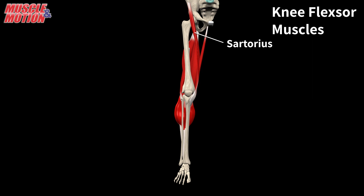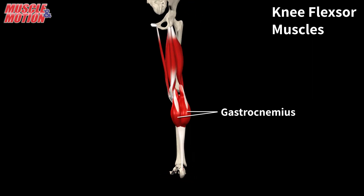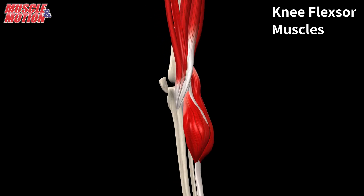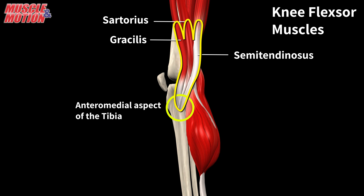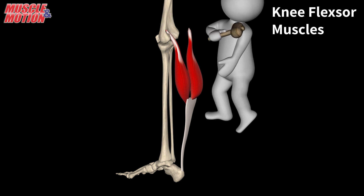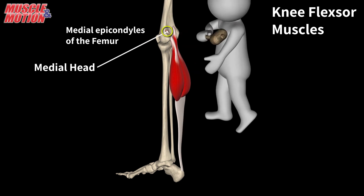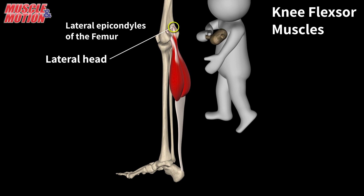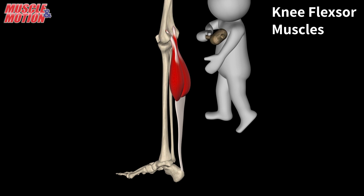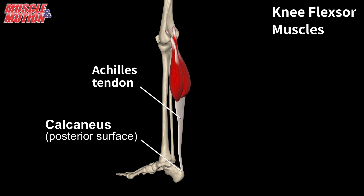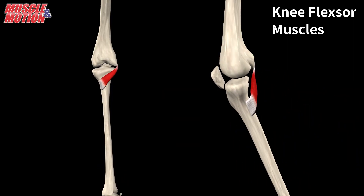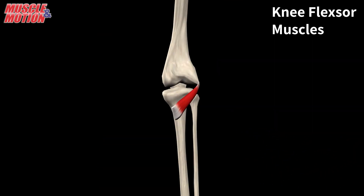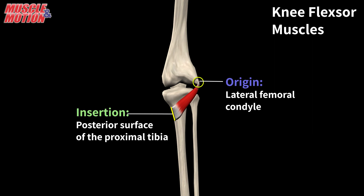Additional knee flexor muscles are the sartorius, the gracilis, the gastrocnemius, and the popliteus. The sartorius and the gracilis, along with the semitendinosus, all insert into the anteromedial aspect of the tibia, also known as the pes anserinus, or goosefoot. The gastrocnemius has two heads — the medial head originates from the medial epicondyle of the femur, and the lateral head originates from the lateral epicondyle of the femur. Both heads connect into the Achilles tendon and insert into the calcaneus. The popliteus initiates knee flexion and unlocks the knee. It originates from the lateral femoral condyle and inserts into the posterior surface of the proximal tibia.